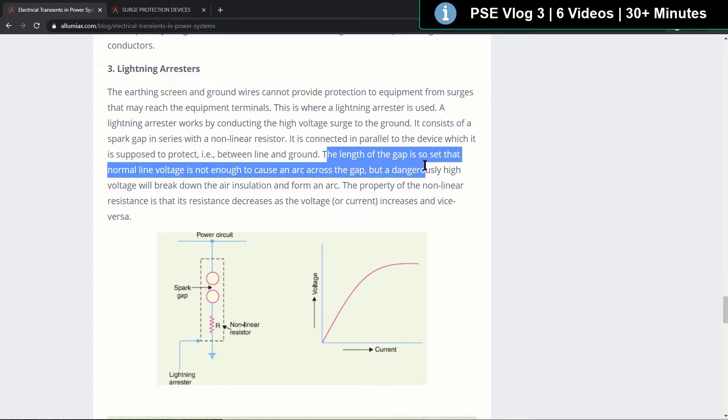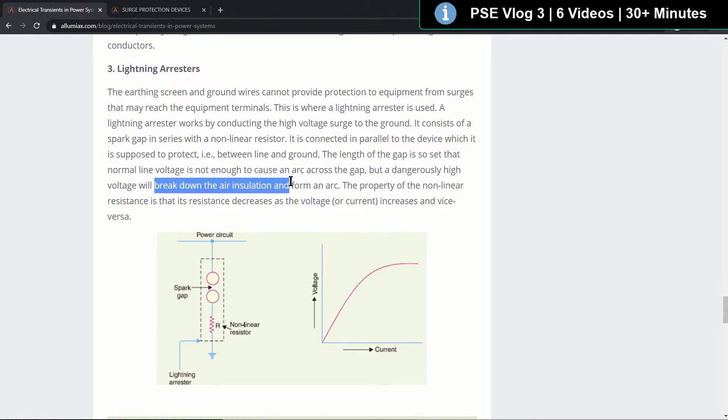The length of the gap is set so the nominal line voltage is not enough to cause the arc across the gap, but a dangerously high voltage will break down the air insulation to form an arc.